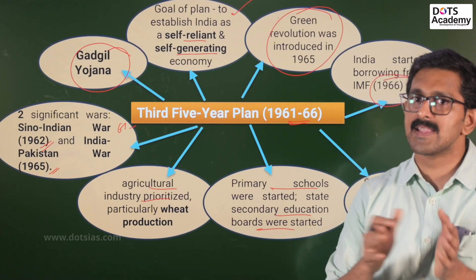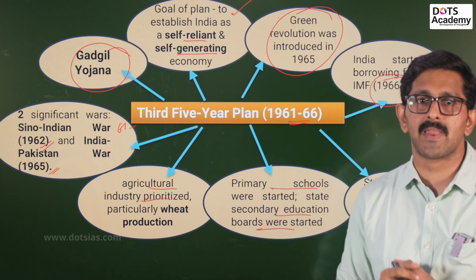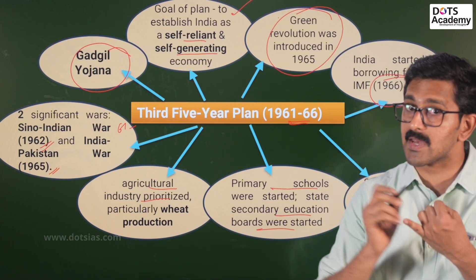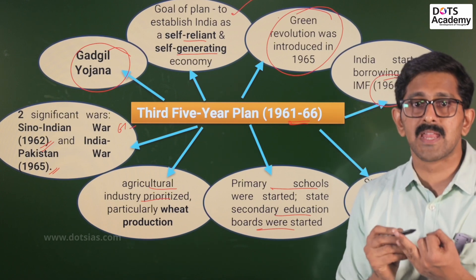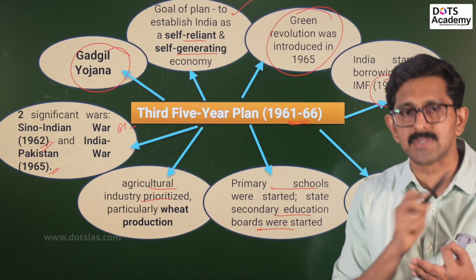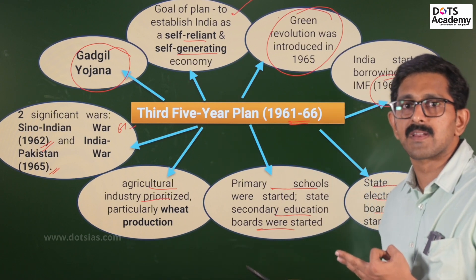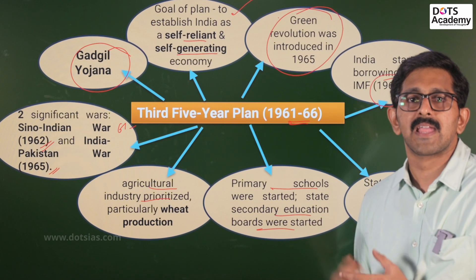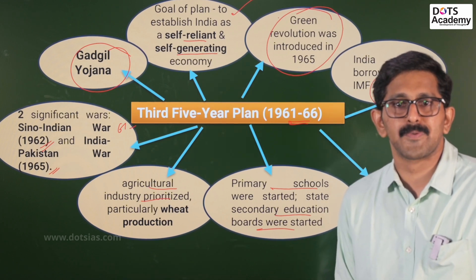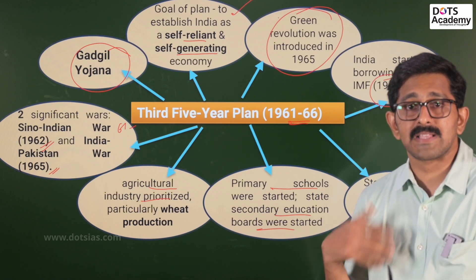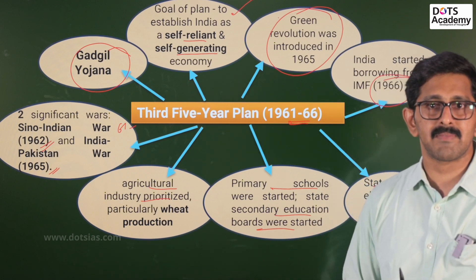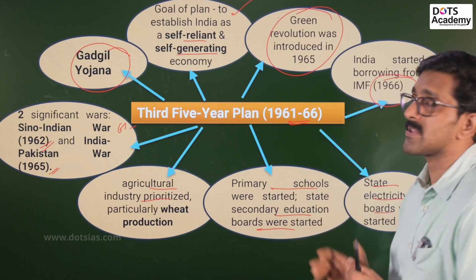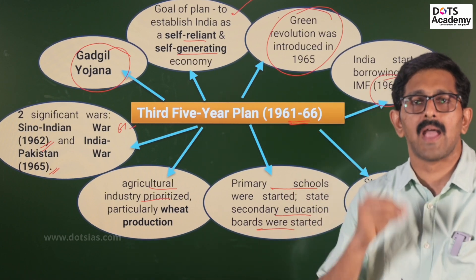The third five-year plan period is very significant because of the green revolution and economic crisis. Due to the economic crises and challenges in primary and secondary sectors, the third five-year plan could not be implemented properly. In 1966 to 1969, we had three annual plans.